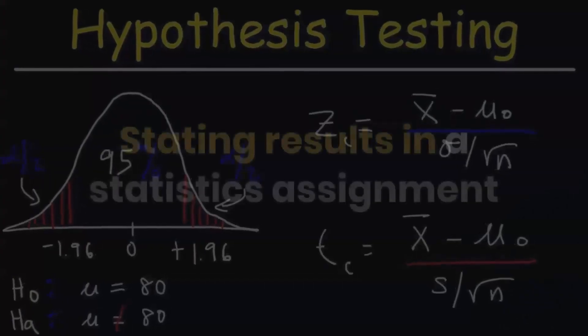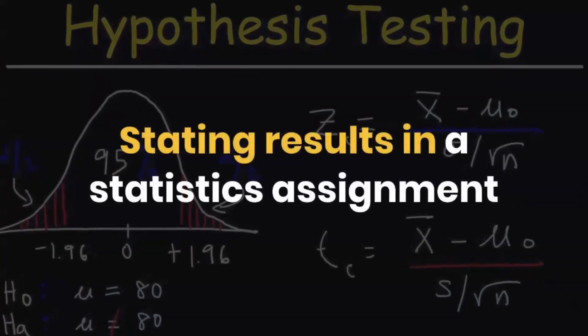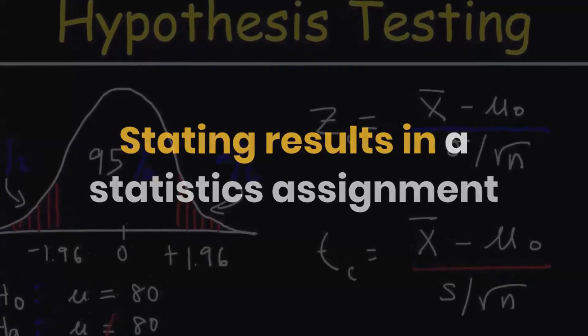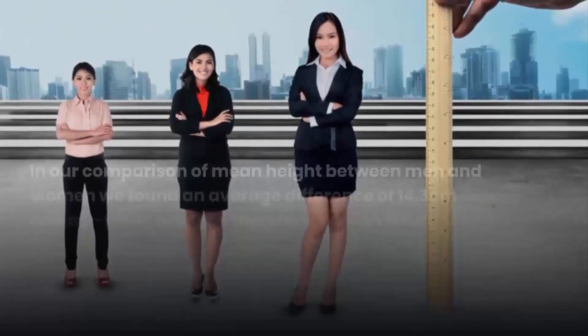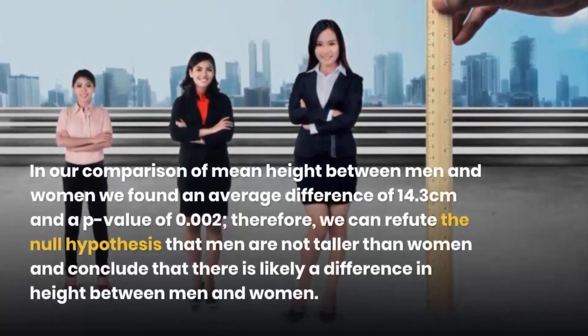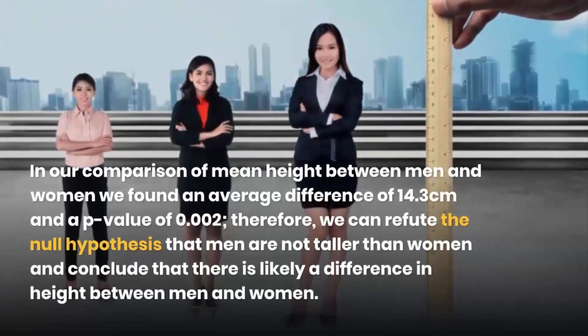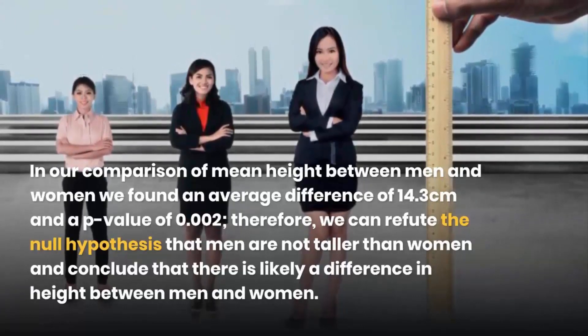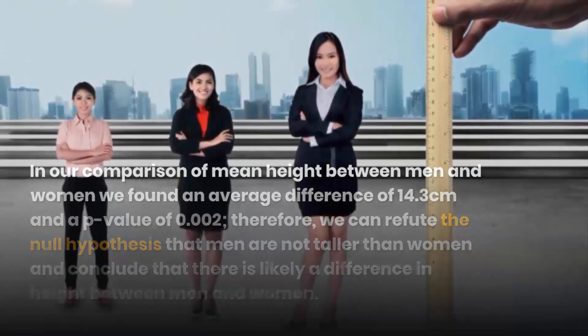Stating results in a statistics assignment: In our comparison of mean height between men and women we found an average difference of 14.03 centimeters and a p-value of 0.002. Therefore, we can refute the null hypothesis that men are not taller than women and conclude that there is likely a difference in height between men and women.